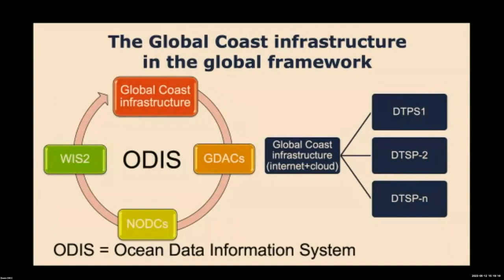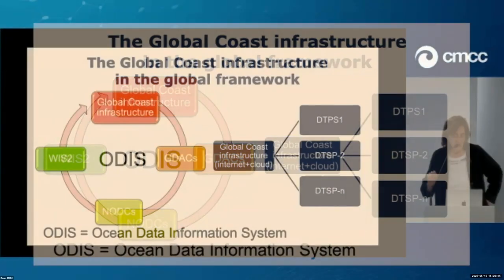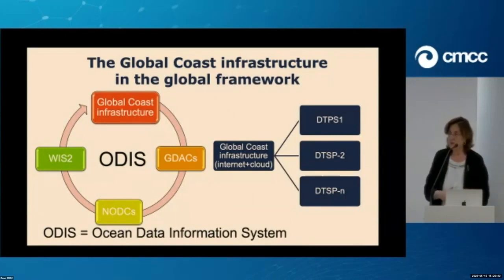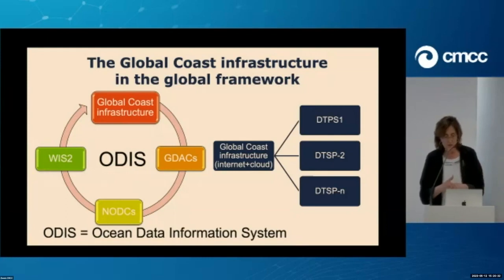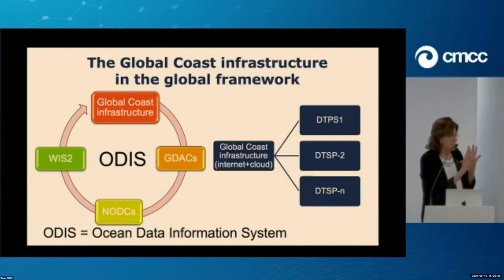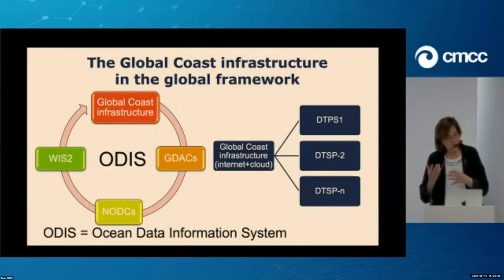We have a big framework dealt with by IODE and partially GOOS, called the Ocean Data Information System. We have WIS2 — the WMO Information System 2 — which is internet-based with no GTS anymore. We have national oceanographic data centers already connected in a loop — traditional archiving data centers in the oceanographic community. We have the GDACs, the global data assembly centers, where you get Argo-specific technologies with a lot of research still being done, releasing data also to the GTS. And we want to add a global coastal infrastructure.